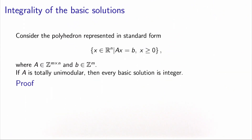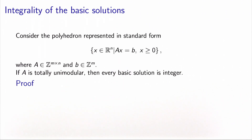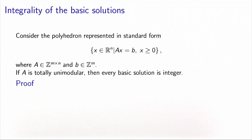We have the great property that the basic solutions of the problem are integral. More formally, if we consider the polyhedron represented in standard form by matrix A and vector b, where both A and b have integer entries, then if A is totally unimodular, every basic solution is integer. In particular, the optimal vertex will also be integer.